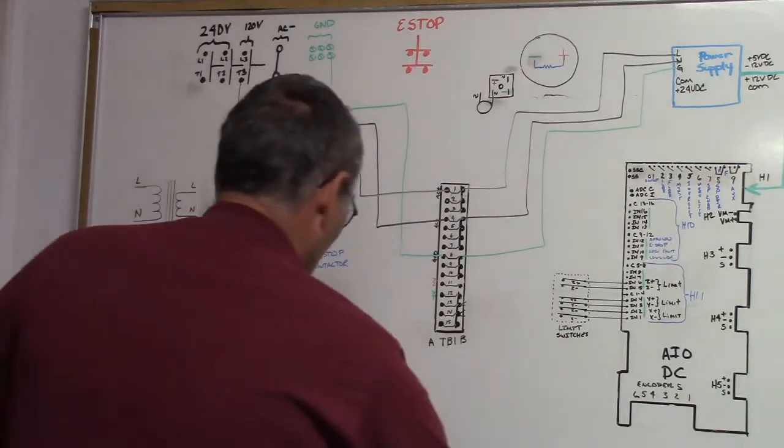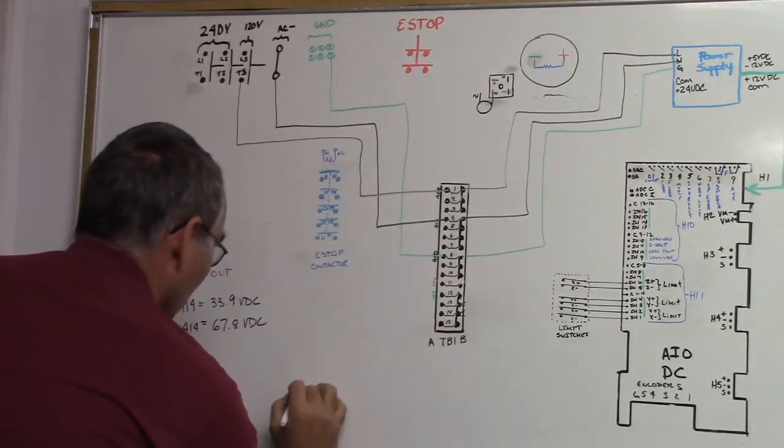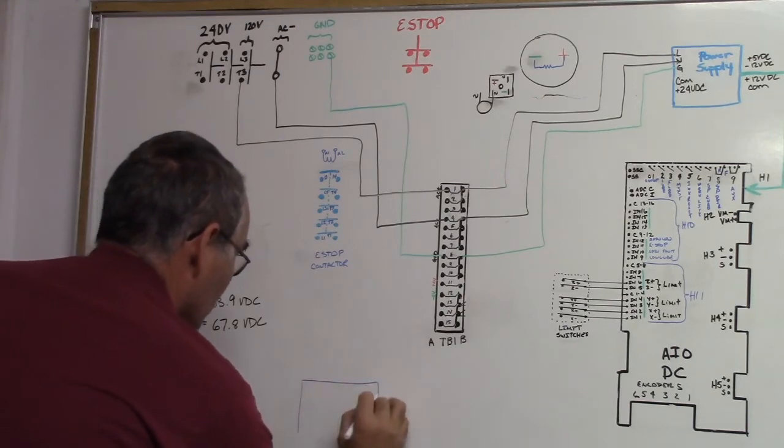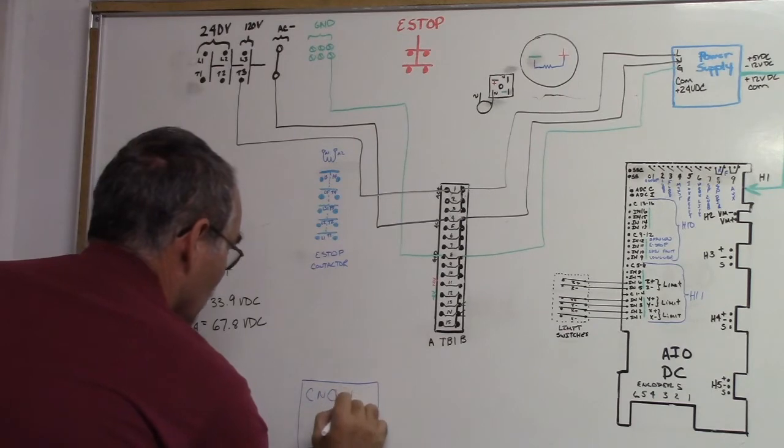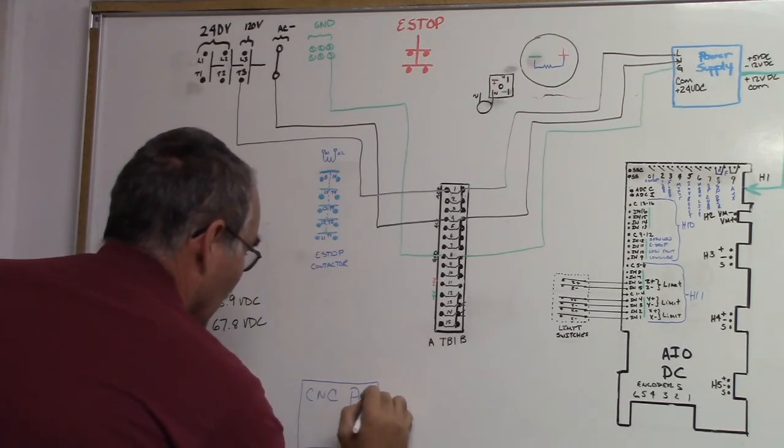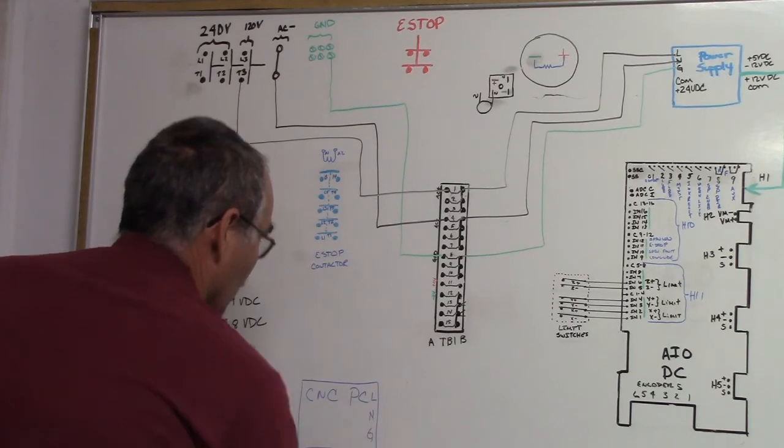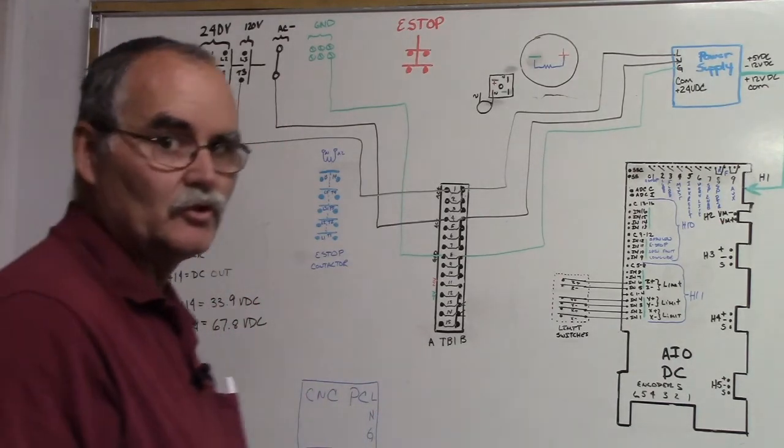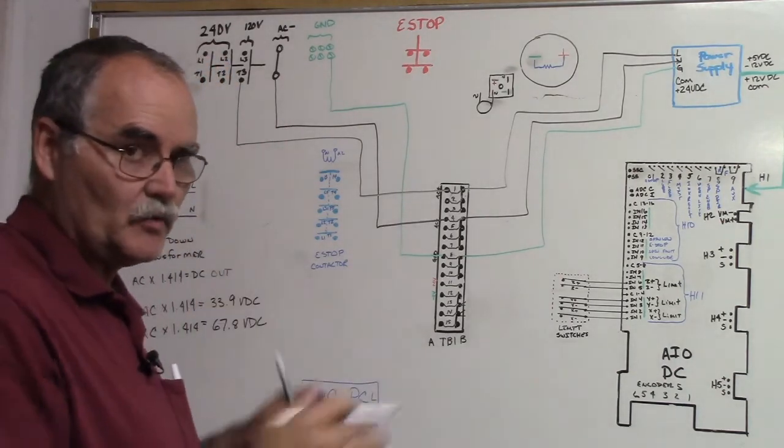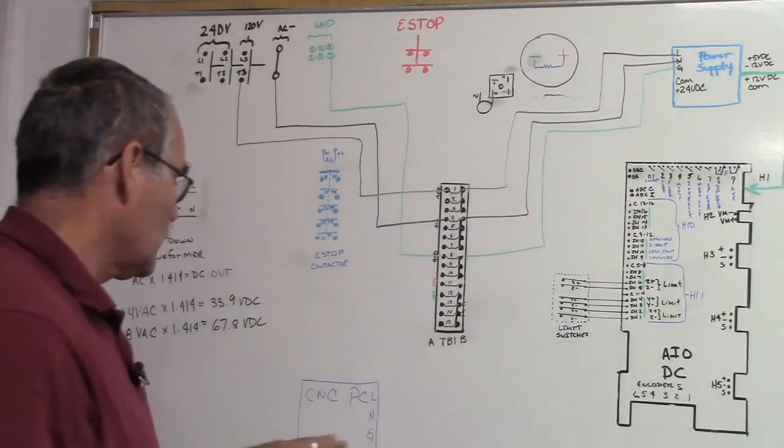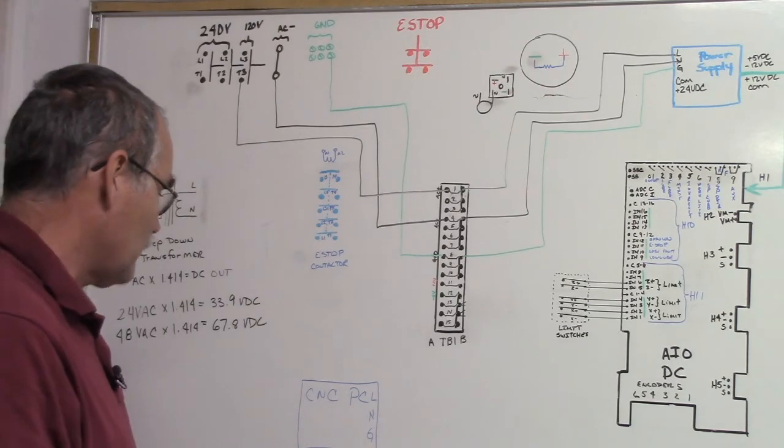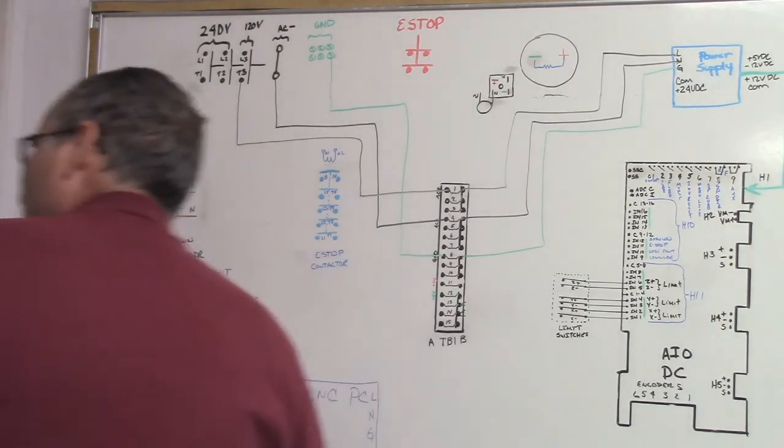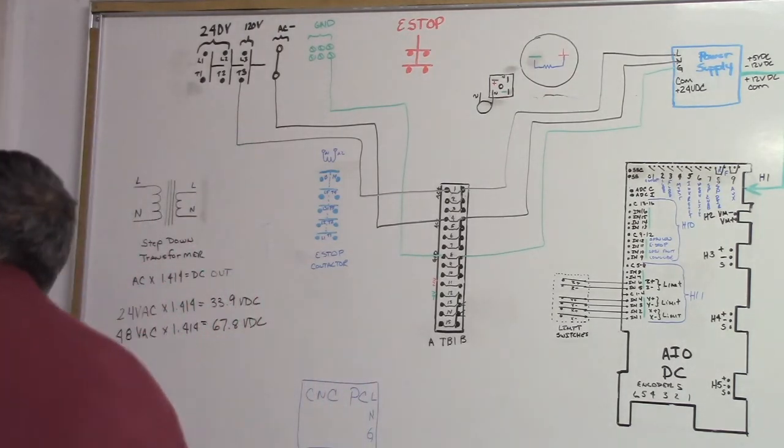I was just thinking, we're going to need power for our CNC PC and our monitor. So we're going to call this the CNC PC and we'll just put line, neutral, and ground. We're going to draw that in here, it is one of the components, so we'll get power to it. Let's get power to our CNC PC.